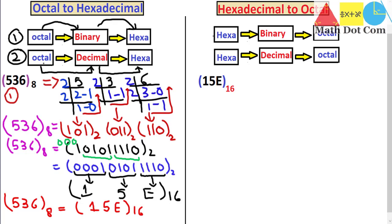You can also convert octal to hexadecimal using method two: first convert octal to decimal, then decimal to hexadecimal — which is also an easy and in my opinion quicker method. We will discuss it later. Now let's see how to convert hexadecimal to octal, which uses the same approach: first convert hex into binary, then binary into octal. We are given 15E hexadecimal.